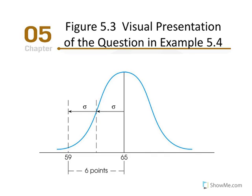This example comes from textbook figure 5.3, related to example 5.4. The question asks: what is the standard deviation equal to in this particular distribution? We're given some values and need to figure out what standard deviation equals. The Z-score establishes a relationship between the score, the mean, and the standard deviation, enabling us to understand how extreme or common a score is.